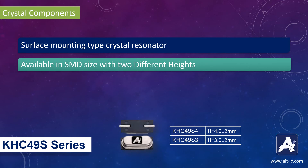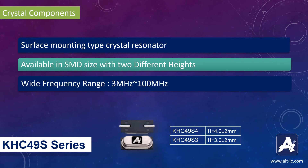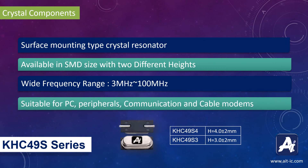KSS 4960 is available in two height variants — 4 mm and 3 mm. These crystals are available in a frequency range of 3 MHz to 100 MHz and are suitable for PCs, notebooks, peripheral devices, as well as communication and cable modems.